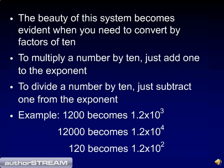The beauty of scientific notation becomes evident when you need to convert by factors of 10. To multiply a number by 10, you just add 1 to the exponent. Similarly, to divide a number by 10, you subtract 1 from the exponent. Remember that the number 1,200 is 1.2 times 10 to the third. To multiply it by 10 to make 12,000, you add 1 to the exponent and get 1.2 times 10 to the fourth. If you divide 1,200 by 10 to get 120, the number becomes 1.2 times 10 to the second.